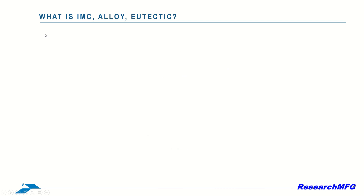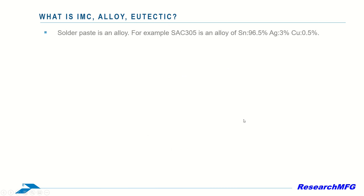So, what is IMC, alloy, and eutectic? What are the differences between them?